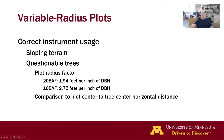Getting the correct tree count is of utmost importance when sampling with plots. With variable radius plots, the distance a tree can be from plot center and still be tallied is a function of tree DBH. For borderline trees, the distance a tree can be from plot center and still be tallied is obtained by multiplying the tree's DBH, measured to one-tenth inch, by the plot radius factor for the instrument being used.